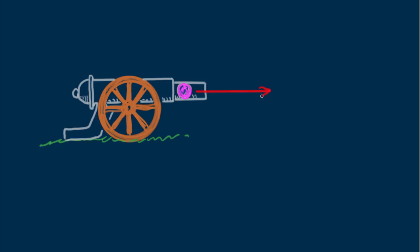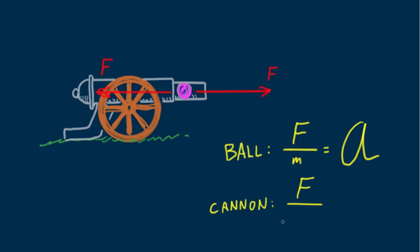Consider a cannonball fired from a cannon. Due to explosive gases inside the barrel, a force is exerted on the cannonball. Here's a snapshot of the ball inside the barrel. Its acceleration is enormous. A reaction force is exerted on the cannon. And it recoils, but with only a small acceleration. Although the forces are the same, the resultant accelerations are very different. This is because the masses are different.